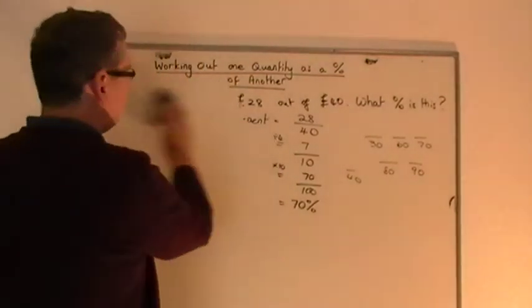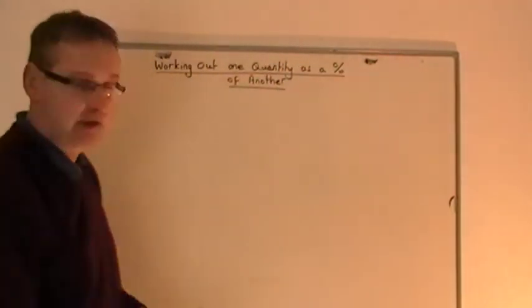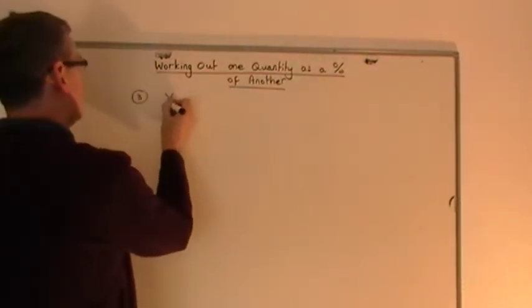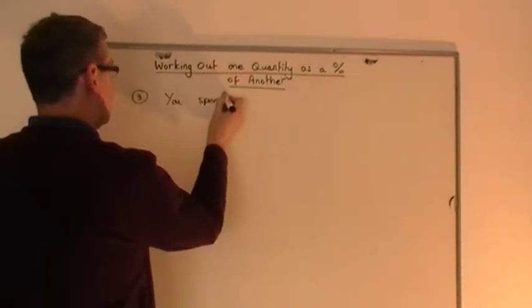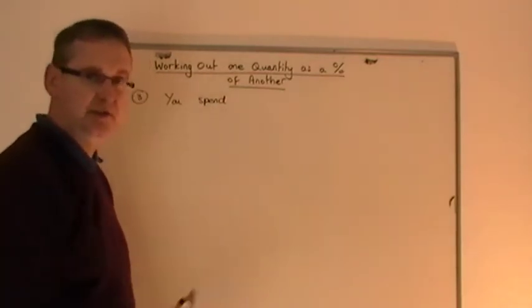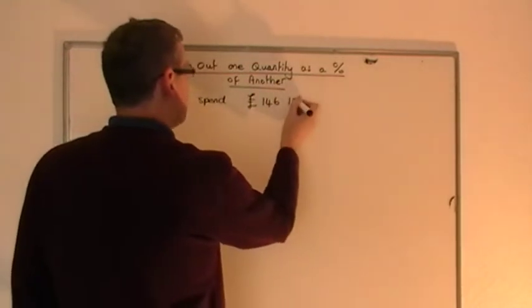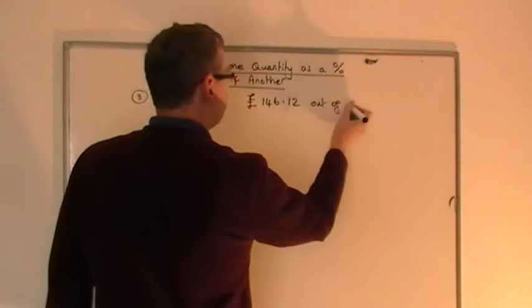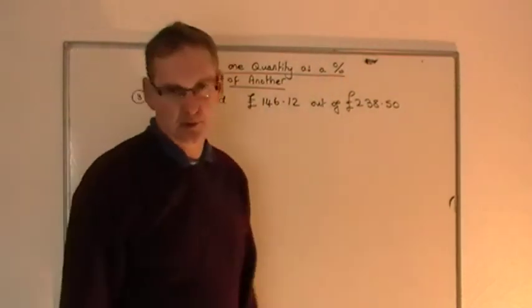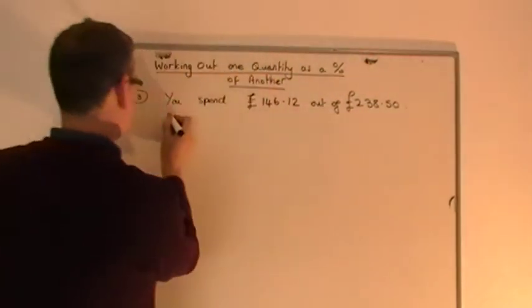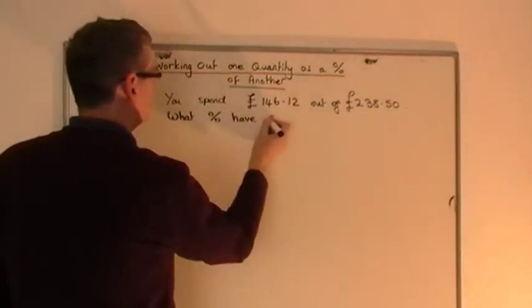Let's do a really awkward example, number 3, for paper 2, which is the calculator paper. So last example then, let's say you spend, let's keep to money, this could be applicable to anything though, where you've got two quantities compared to each other, it doesn't have to be money. You spend, let's say you spend £146.12 out of £238.50. So you can see the figures are really awkward figures. And I want to know what percentage have you spent.